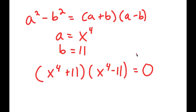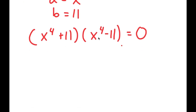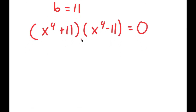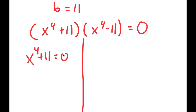From here, I get two equations: x to the power of 4 plus 11 equals 0, and x to the power of 4 minus 11 equals 0.